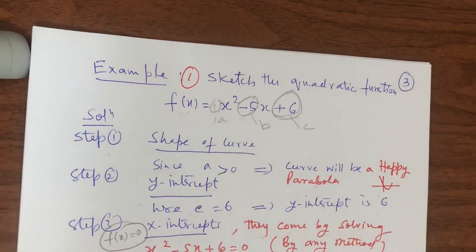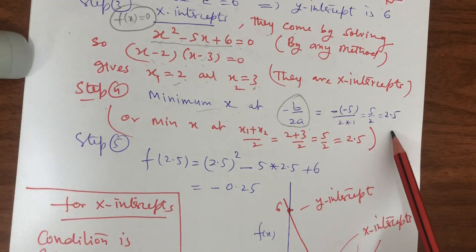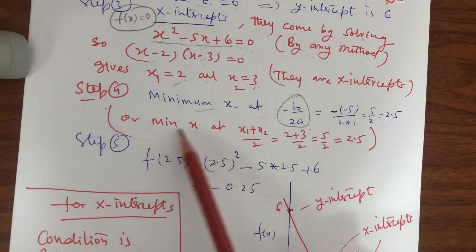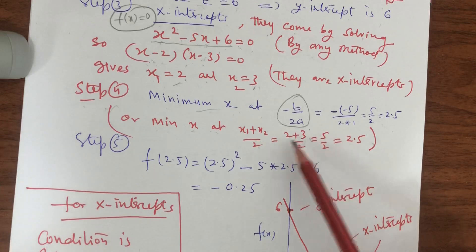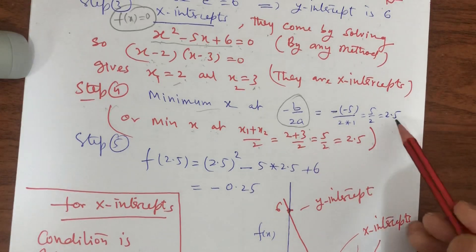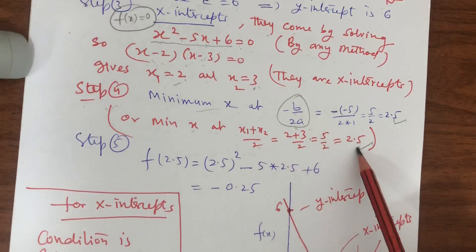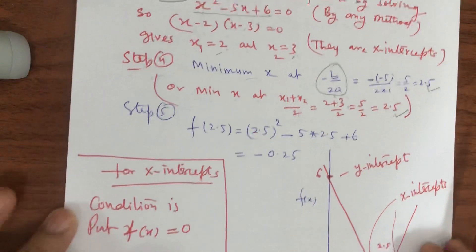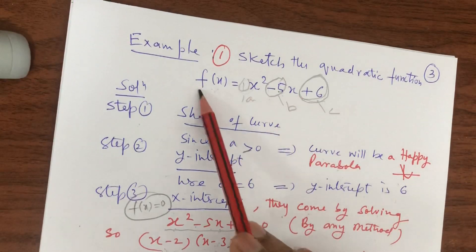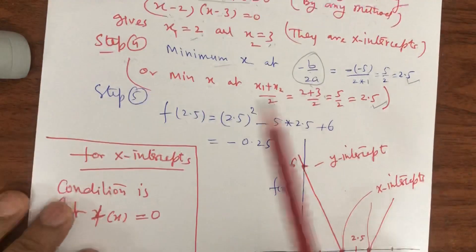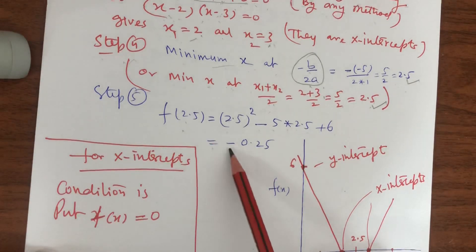Step 4: the minimum x is found using the rule: x = -b / 2a. Here that gives -(-5) / (2×1) = 5/2 = 2.5. Alternatively, the minimum x is the midpoint of the x-intercepts: (x1 + x2) / 2 = (2 + 3) / 2 = 2.5. Both rules give the same value of 2.5.